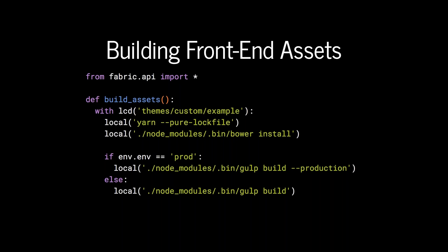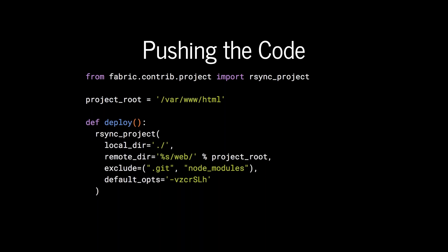We also pass through an environment variable called environment — env.env equals prod. Depending on what the environment is, we can run gulp build or gulp build --production. Once built locally, we push the code. I've defined what a project root is, which is /var/www/html. There's a task called deploy, and in most cases I just use rsync, provided by fabric.contrib. We specify the local directory and the remote directory — %s is similar to sprintf in PHP with slightly different syntax — so project root gets interpreted and we add /web to the end. We can exclude the .git directory and node_modules because we don't need those on the remote server.